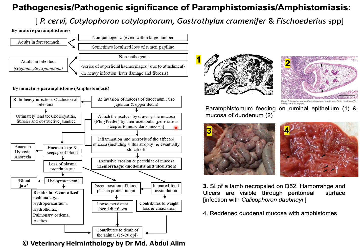Before talking about the pathogenesis caused by the immature fluke, the first figure shows paramphistome feeding on rumenal epithelium, and the second figure shows feeding on the mucosa of the duodenum. This sort of feeding is called blood feeding.